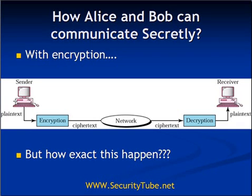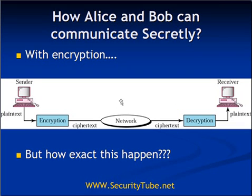This is the diagram which shows pictorially how encryption will look like. A sender, which is Alice, will have a plain text message. With the help of encryption she will encrypt that message to get a ciphertext message. She will send this ciphertext over a publicly shared network to Bob, who with the help of decryption will decrypt that message to get again the plain text message.